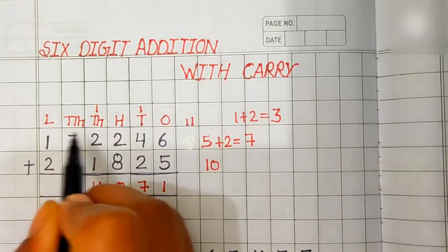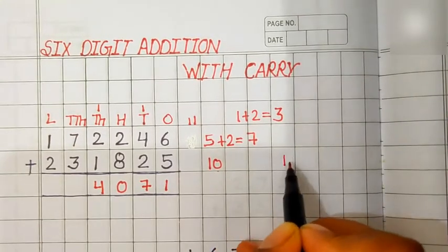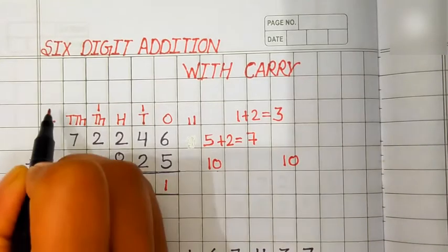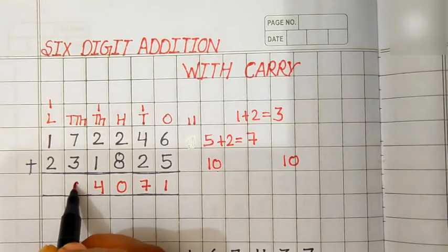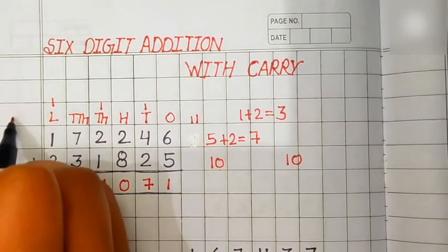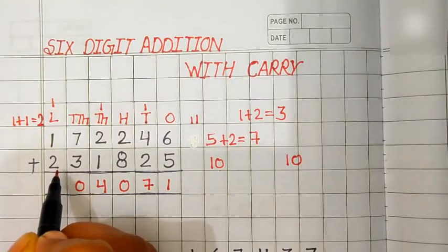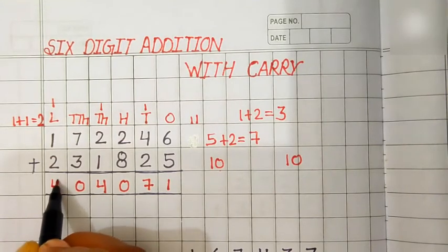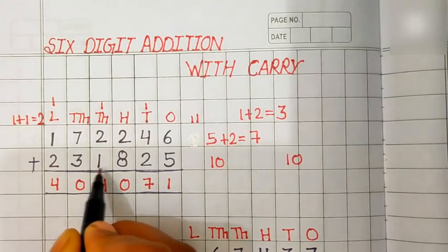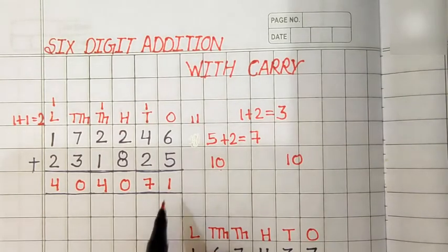Add the digit at 100,000 place. 7 plus 3 is equal to 10. 10 is a two-digit number. We will carry 1 to the lakh place and 0 comes in the answer. 1 carry plus 1 is equal to 2. 2 plus 2 is equal to 4. 1,07,2246 plus 2,31,825 is equal to 4,04,071. We solve next example.